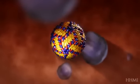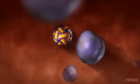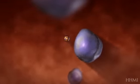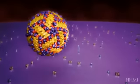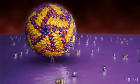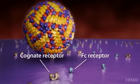Immune cells are targeted by the dengue virus. There are two cell surface receptor molecules important in dengue infection. The cognate receptor is involved in normal infection, and the FC receptor is involved in a phenomenon called antibody-dependent enhancement.